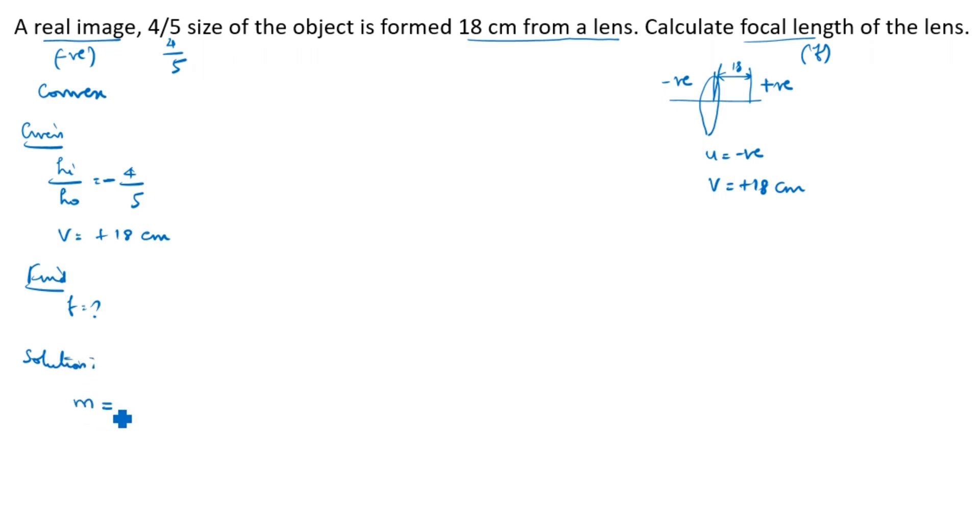Magnification formula: m is equal to hi/ho is equal to v/u equal to minus 4/5. What is v given in this question? 18. 18/u is equal to minus 4/5. We have to cross multiply this one.